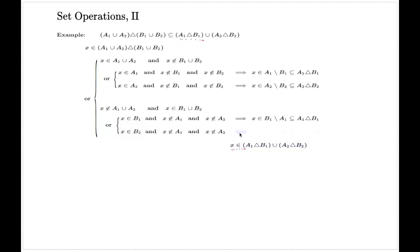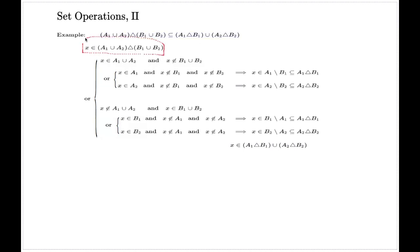The final branch: because of these two conditions, X belongs to the set difference of B2 and A2, which is smaller than the symmetric difference of A2 and B2, which is smaller than the union of the two symmetric differences. So we started from the left-hand side, completely branched out all possibilities, and for each possibility concluded that X belongs to the right-hand side. This is the complete proof of the embedding of two sets.